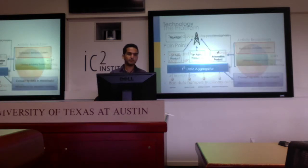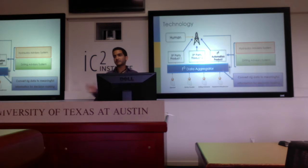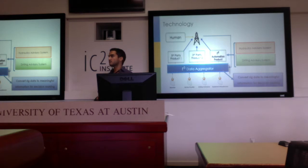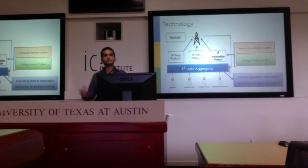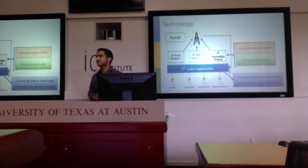That's exactly the problem we're trying to solve with R5 Automation. We're introducing a software platform that allows for aggregation of data, development, testing, and deployment of various automation products for the oil field. This means aggregating data in the design stage from multiple stakeholders, allowing them to quickly deploy their automation products, and also allowing bad information coming from sensors to be used for meaningful decision-making.